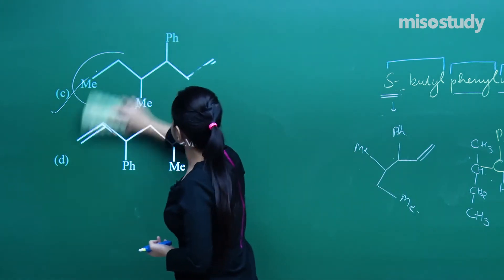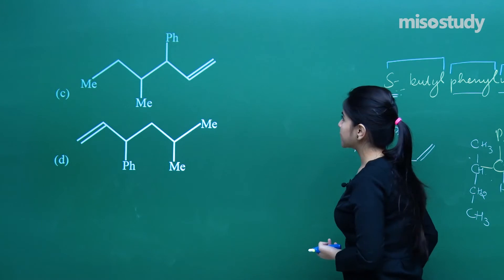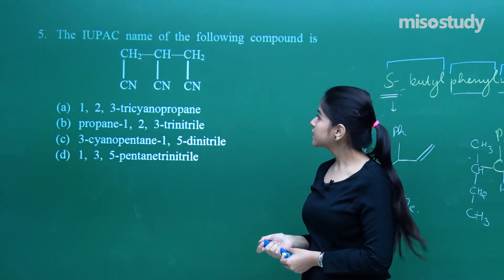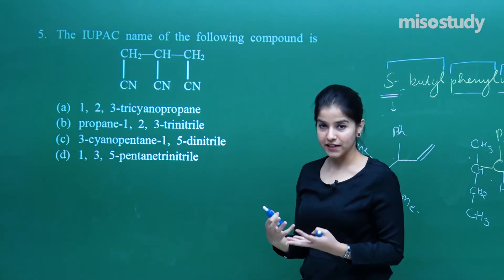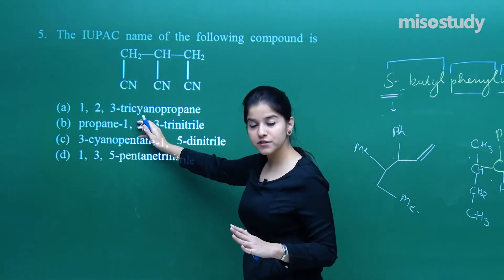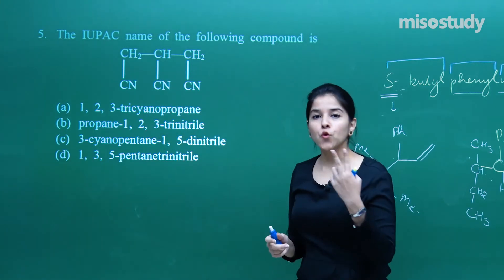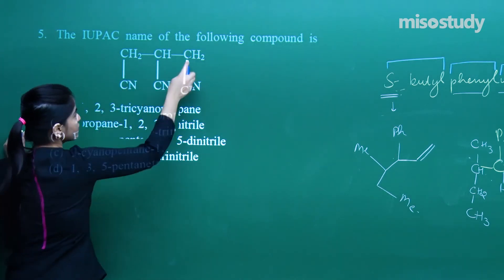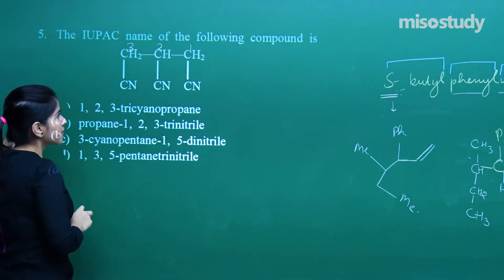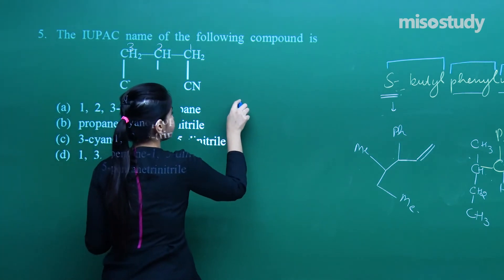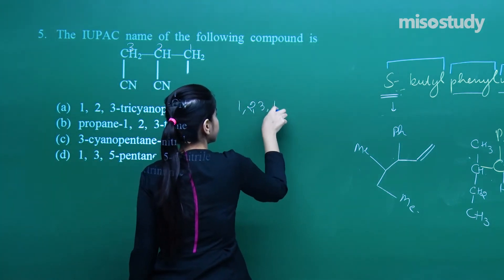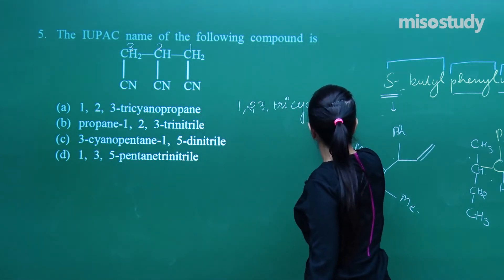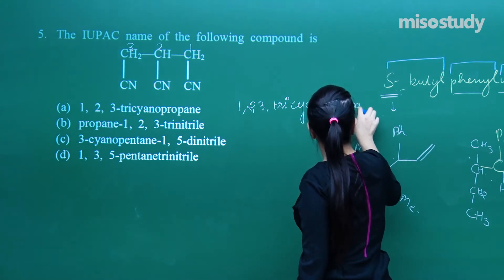Now the IUPAC name of the following compound — the compound here is kind of complicated. It has got three CN groups, three cyano groups. There could be two possible ways of naming this compound. If I number this as 1, 2, 3, the answer could be 1,2,3-... but since we know that the cyanide or the CN group is a terminating group, we know this is terminating.